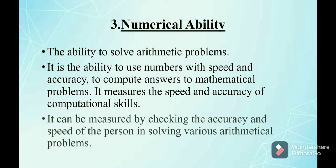The third primary mental ability is numerical ability — the ability to solve arithmetic problems. It is the ability to use numbers with speed and accuracy to compute answers to mathematical problems. It measures the speed and accuracy of computational skills, and can be assessed by checking the accuracy and speed of a person in solving various arithmetical problems.